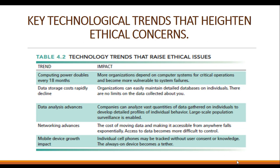The fifth trend creating ethical concerns is mobile device growth. Individual cell phones may be tracked without user consent or knowledge — the always-on device becomes a tether. Smartphones have the same capabilities as desktop computers, so a lot of data is available on your mobile phone and that data can easily be tracked and accessed by others without your consent. More and more people relying on mobile devices is really creating more problems for individuals.